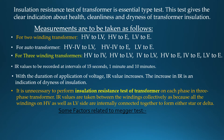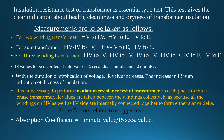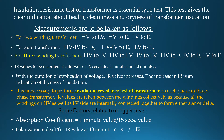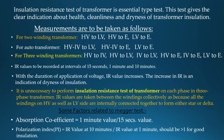Some factors related to the mega test: Absorption coefficient is equal to the 1 minute value divided by the 15 seconds value. Polarization index PI is equal to IR value at 10 minutes divided by IR value at 1 minute, and should be greater than 1 for good insulation.